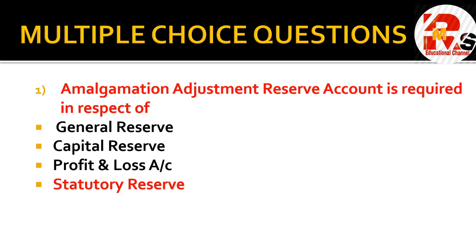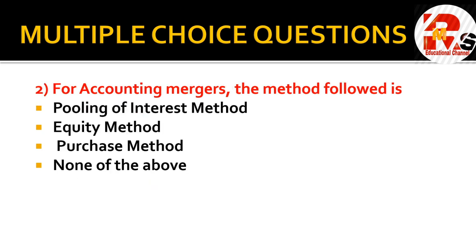The second question: for amalgamation accounting mergers, the method followed is — pooling of interest method, equity method, purchase method, or none of the above? In the case of accounting merger, we need to remember that the method followed is the pooling of interest method. For normal absorption, we follow the purchase method. So the right answer is pooling of interest method.